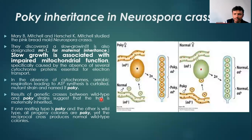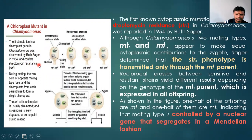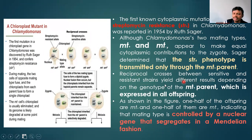The same type of example is observed in Chlamydomonas, studied by Ruth Sager in 1954, which confirmed a specific gene for streptomycin resistance. The mating types mt+ and mt- make equal cytoplasmic contributions to the zygote, but the streptomycin (str+) phenotype is transmitted only through the mt+ parent. The reciprocal cross between sensitive and resistant strains yielded different results depending on the genotype of the mt+ parent, which is expressed in all offspring.